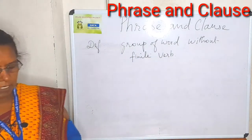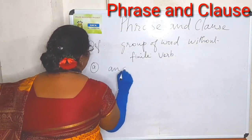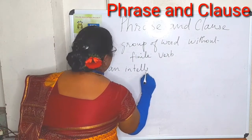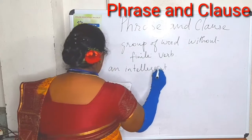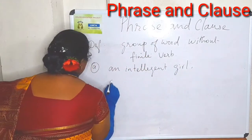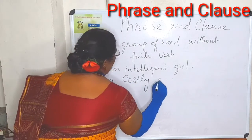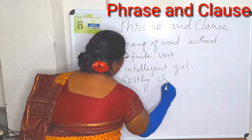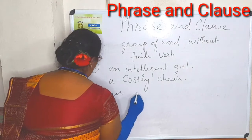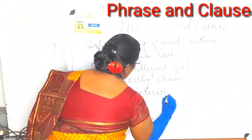For example, an intelligent girl. A costly pen, a costly chain — it may be according to the sentence. An interesting story.